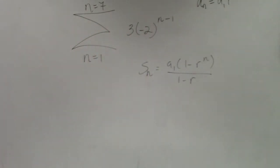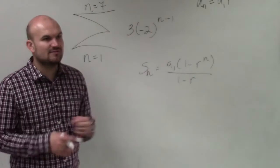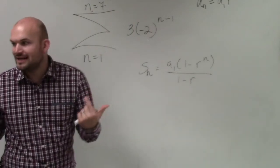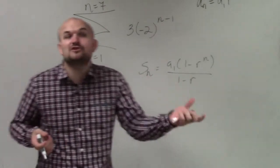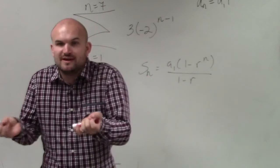Now, to find the sum, we've got to figure out all the information. So the first thing we need to figure out is what a sub 1 is. Do you guys remember when I gave you a sequence, an explicit formula, I said, hey, find the first five terms. What did we do to find the first five terms?